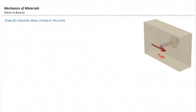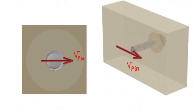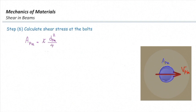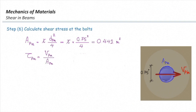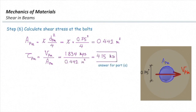To find the shear stress in each bolt: the shear force is V_pin, and the cross-sectional area of each bolt is A_pin = π × d² / 4. With diameter = 3/4 inch, A_pin = 0.442 in². The shear stress equals V_pin divided by the area, giving a shear stress of 4.15 ksi. That is the answer to Part A.